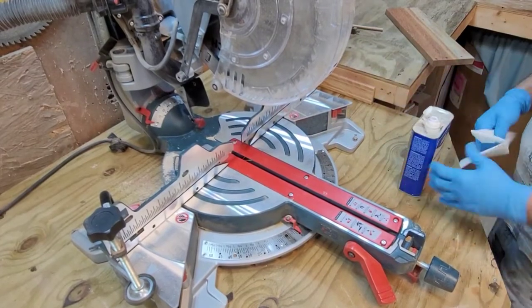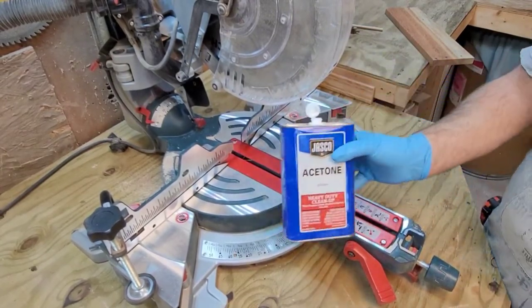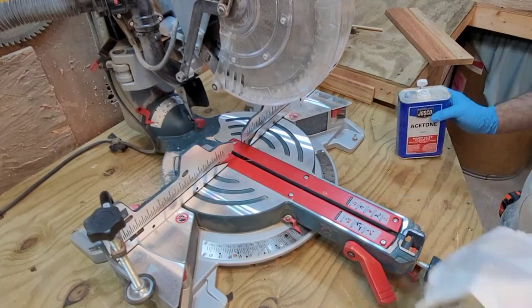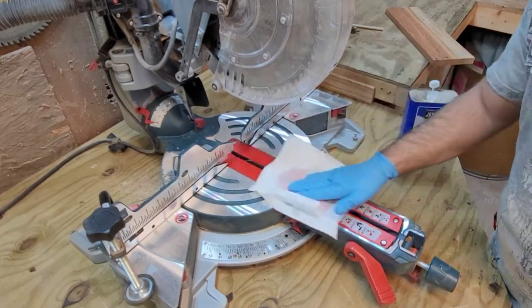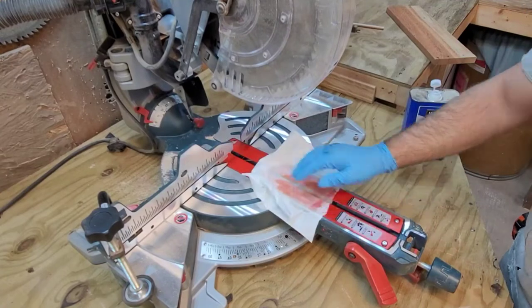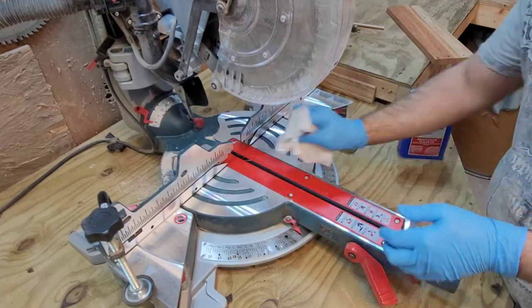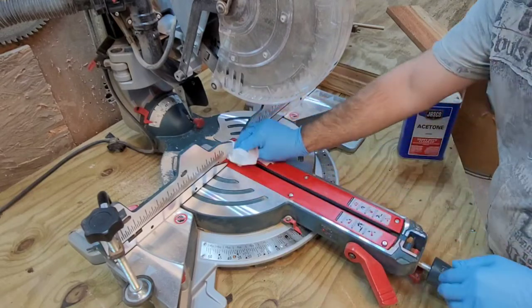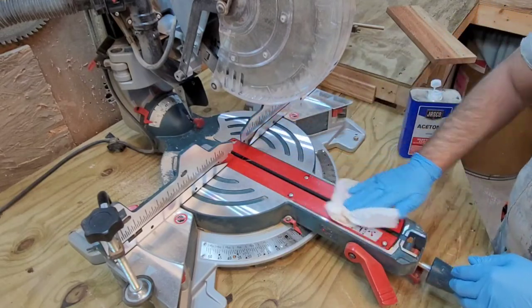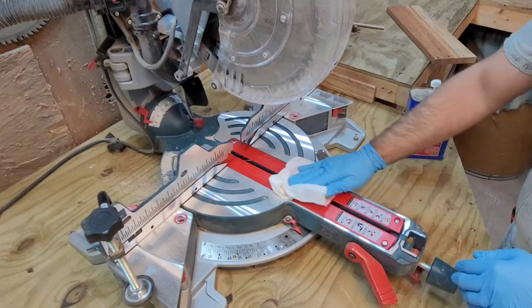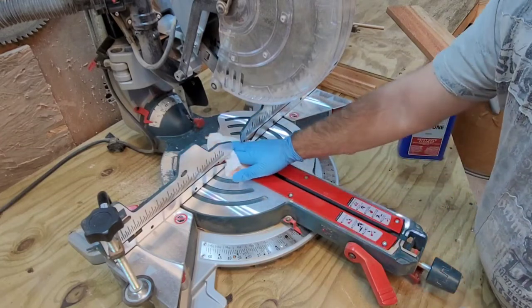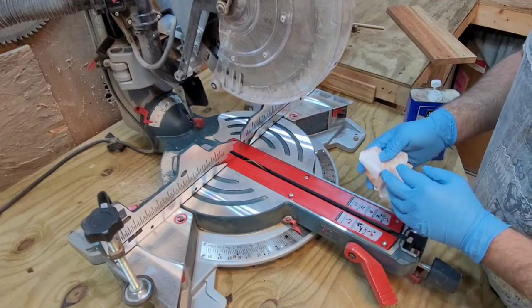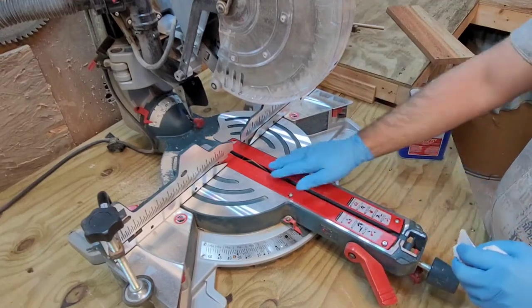So the first thing we need to do is clean it off. We'll clean it off with some acetone. Oh, that shit don't like acetone. Just for y'all that don't know, acetone will melt plastic.